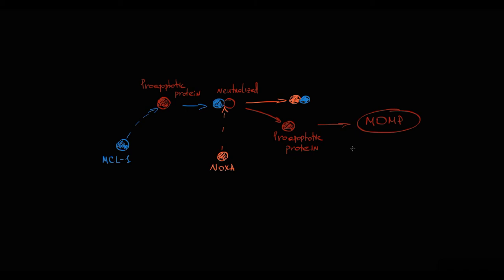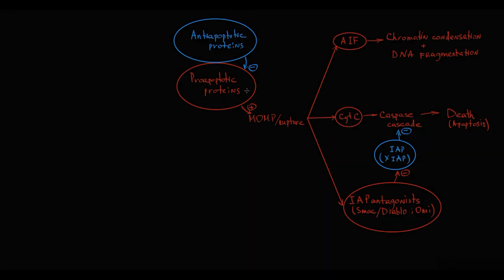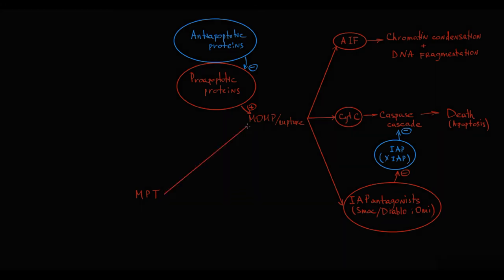So that is an example of how anti- and pro-apoptotic proteins function. Another factor that can affect the state of the mitochondrial outer membrane is called mitochondrial permeability transition (MPT). MPT is a condition when the inner mitochondrial membrane, which is totally impermeable under normal conditions, becomes permeable, eventually resulting in rupture of the mitochondrial outer membrane.